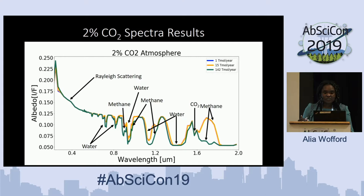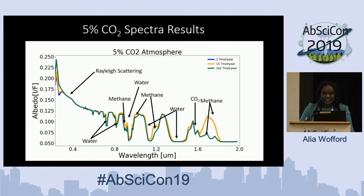As CO2 increases to 2%, the high methane flux (green) still shows strong absorption at different wavelengths, but not as strong as in the 1% case. The low and medium flux lines (blue and yellow) become almost indiscernible. The same behavior is seen in the 5% CO2 atmosphere — strong absorption remains for the high methane flux, but the low and medium flux spectral lines become very indiscernible.